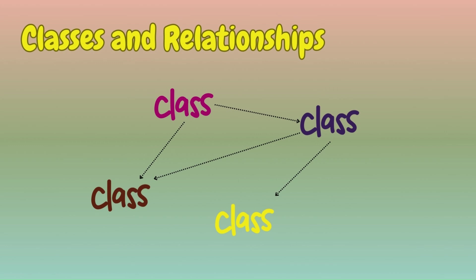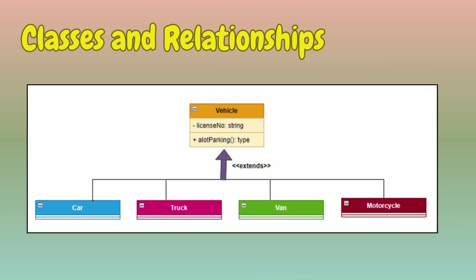The third step is establishing classes and relationships. The heart of the object-oriented design interview lies in identifying the classes and their relationships. We must list all objects relevant to the system, define their attributes and operations, map out relationships between objects, and justify the use of abstract classes or interfaces. High level class diagrams should be drawn to aid visualization for the interviewer.